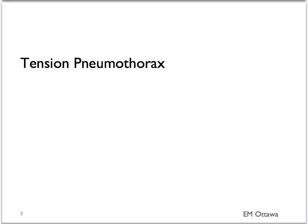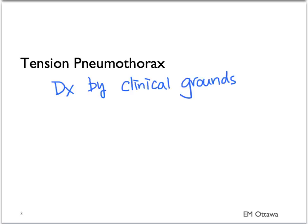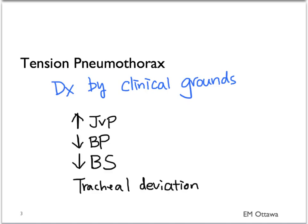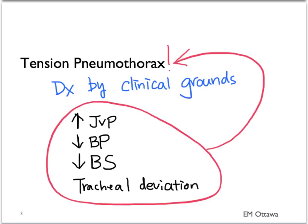Please bear in mind that a tension pneumothorax should be diagnosed on clinical grounds alone. We do not have time to do diagnostic imaging since we must act quickly. If you see a patient with a combination of increased JVP, hypotension, decreased breath sounds, and tracheal deviation, that should cue us to think the patient has a tension pneumothorax, and we would treat the patient without confirming X-rays.